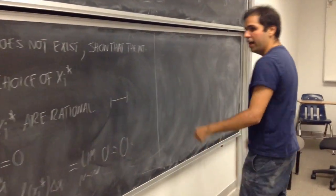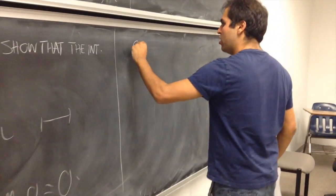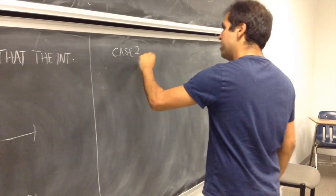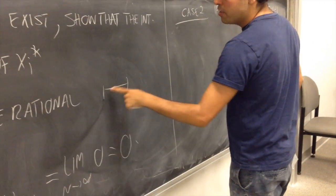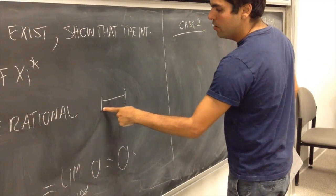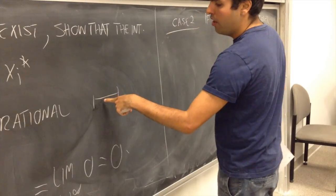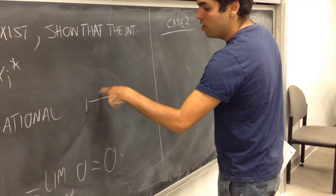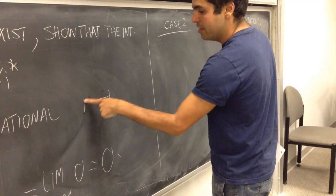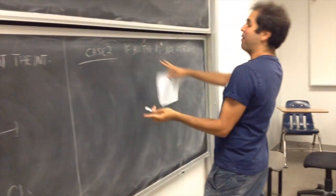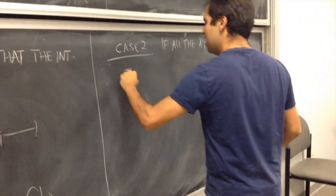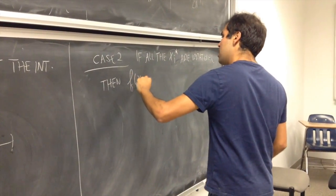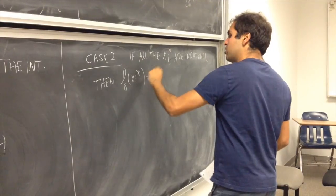On the other hand, what if we choose all the xi stars to be irrational? And again, you can do it by, pick not the midpoint of it, but maybe this plus a very small, like, irrational, 1 over an irrational number times the distance between those. Point is, it is possible to choose xi star irrational. Then, f of xi star equals 1. Again, that's by definition.